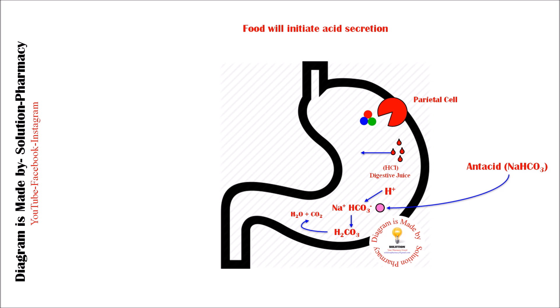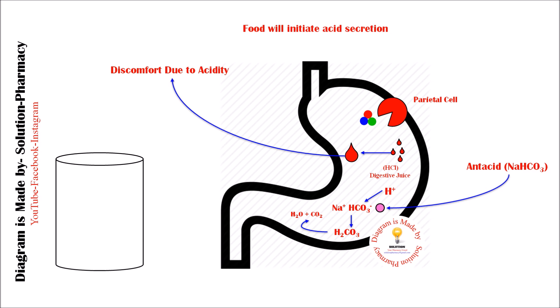This carbon dioxide gas is released as bubbles from the stomach, causing a burp, and provides instant relief from bloated stomach and heartburn. By neutralizing the excess acid, antacids also help reduce irritation and damage to the stomach lining caused by excessive acid production.